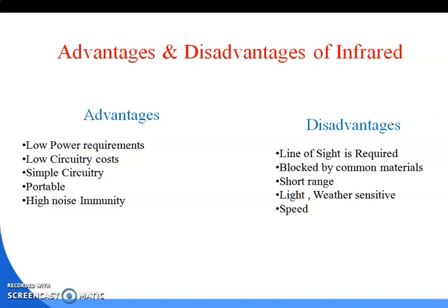The disadvantages of infrared are: line of sight is required — the remote and the device must be in a straight line for it to work; it is blocked by common materials — even placing your hand in front of the infrared will block the signal; short range; light and weather sensitivity; and limited speed.